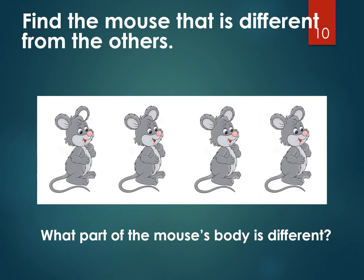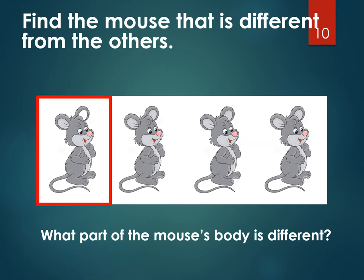Here are those mice again. Do you see anything different about these mice? There's one mouse that's different. Now, this is a hard one — it's not easy to spot. Look very, very carefully. I'll give you a hint: look at their ears. Did you point to this one? Yes, this mouse has a white ear. Everybody else has ears that are blue or grey inside, but this mouse has a white ear inside. Very good. Let's move along.